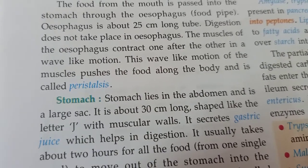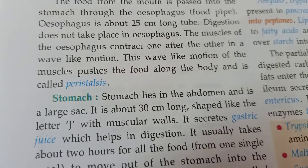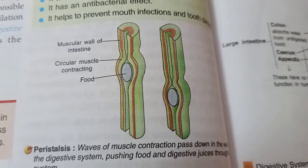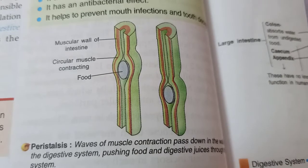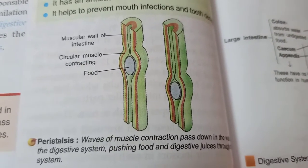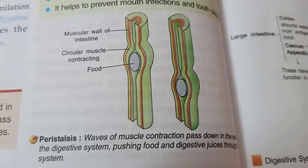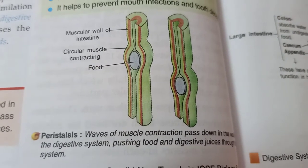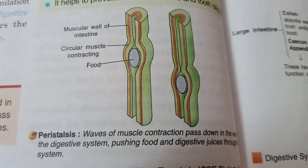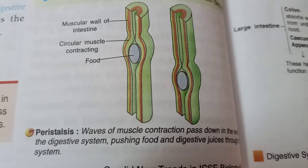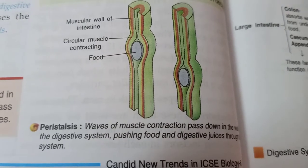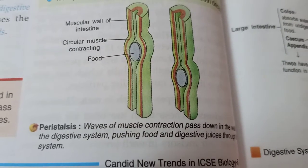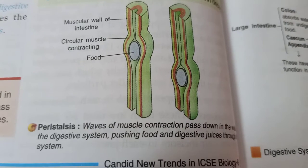This wave-like motion of the muscles pushes food along and is called peristalsis. You can see in the diagram the muscular wall of the intestine with circular muscles contracting. These muscles contract and expand as food moves inside the esophagus, and this wave-like contraction and expansion is known as peristalsis.